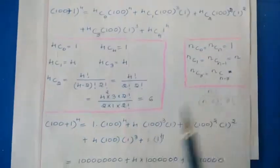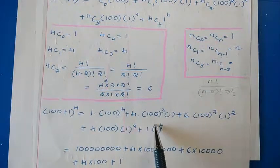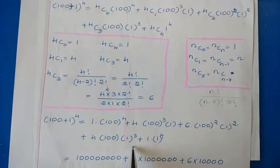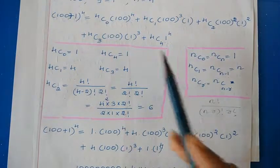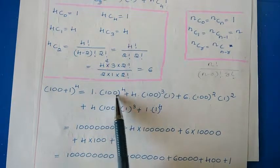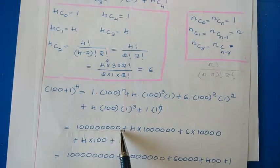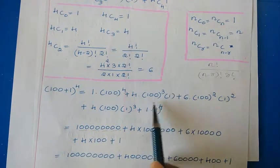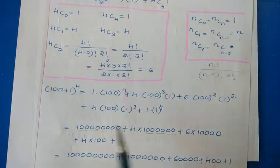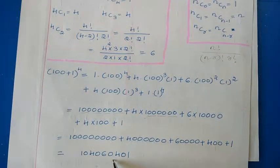Substituting all values: 1 times 100 to the power 4, plus 4 times 100 cubed, plus 6 times 100 squared, plus 4 times 100, plus 1. Writing powers of 100 directly: 100000000 plus 4000000 plus 60000 plus 400 plus 1. After adding, the final answer is 104060401.